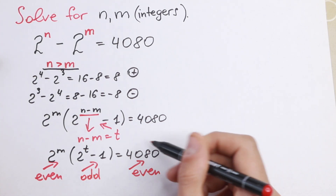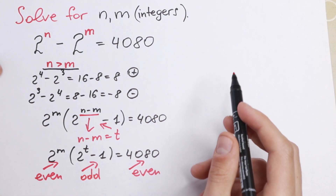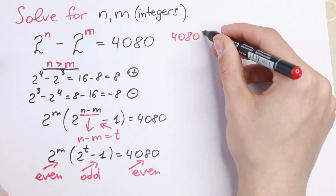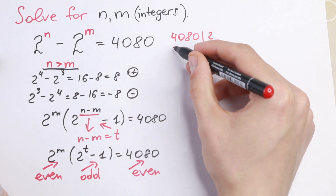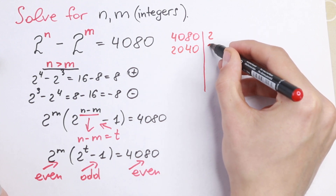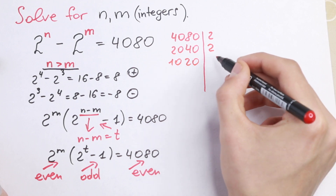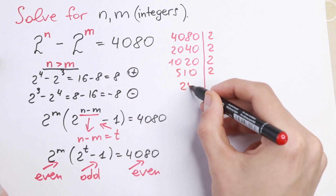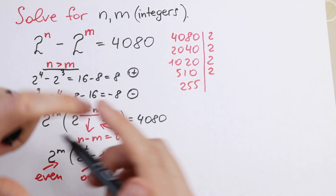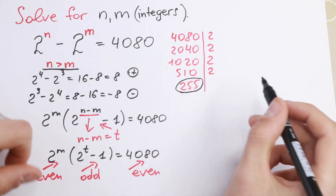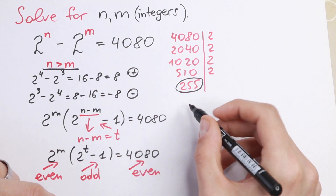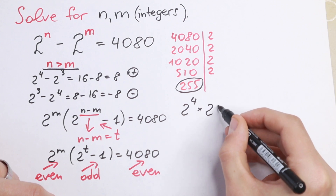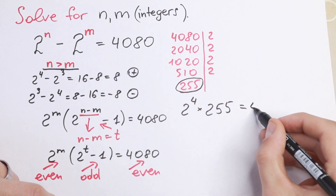So let's decompose 4080 as a product of even times odd. Dividing by 2 repeatedly: 4080 → 2040 → 1020 → 510 → 255. We reach an odd number after four divisions. So 4080 equals 2 to the 4th power times 255.